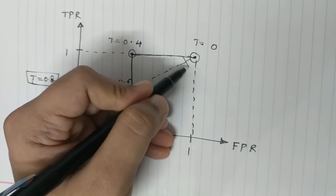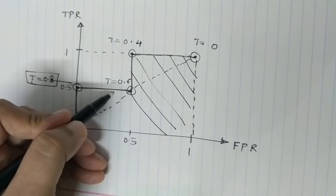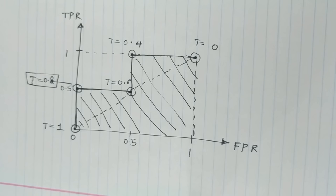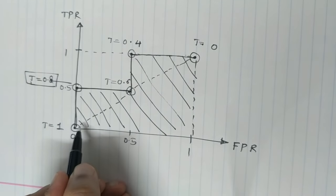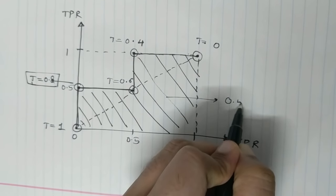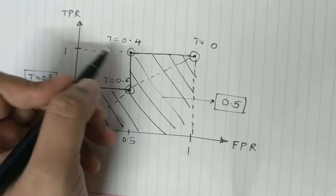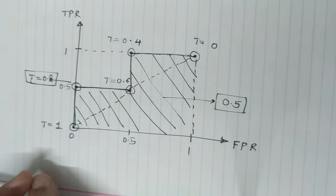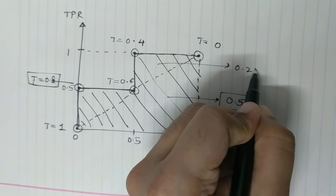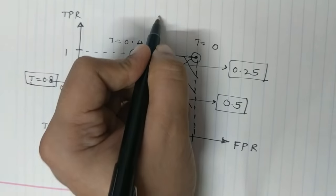Now all this area is the area under the curve. This value if you see is a right angle triangle inside a square. So this area is 0.5. This area sums up to half the square of this area, which would again result into 0.25. So the total area under the curve for this classifier is 0.75.